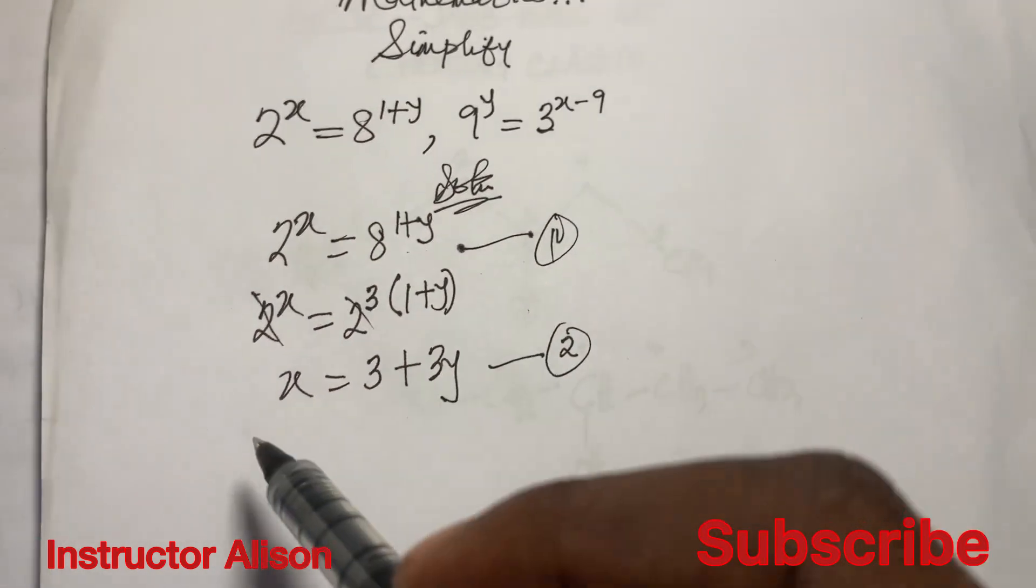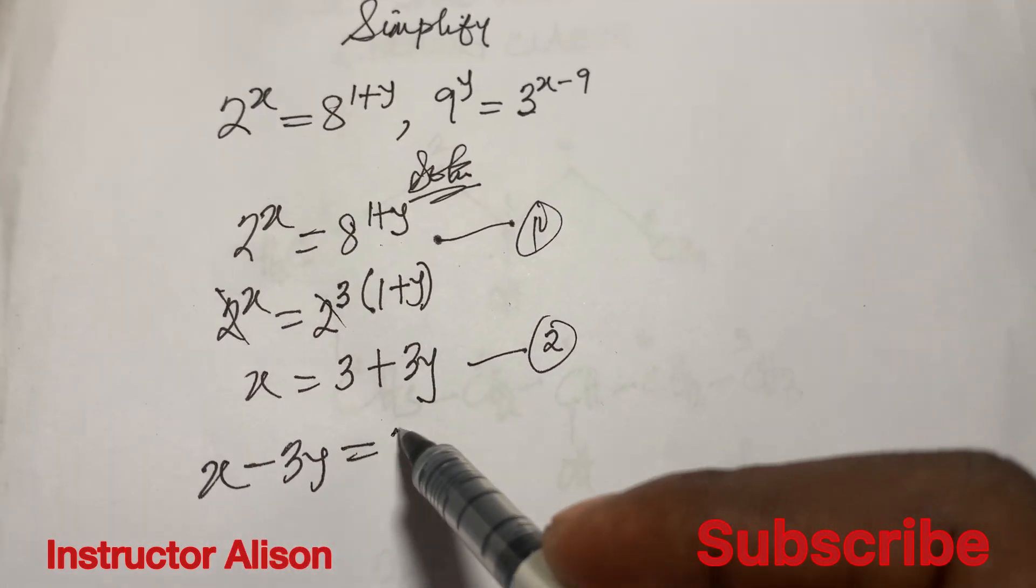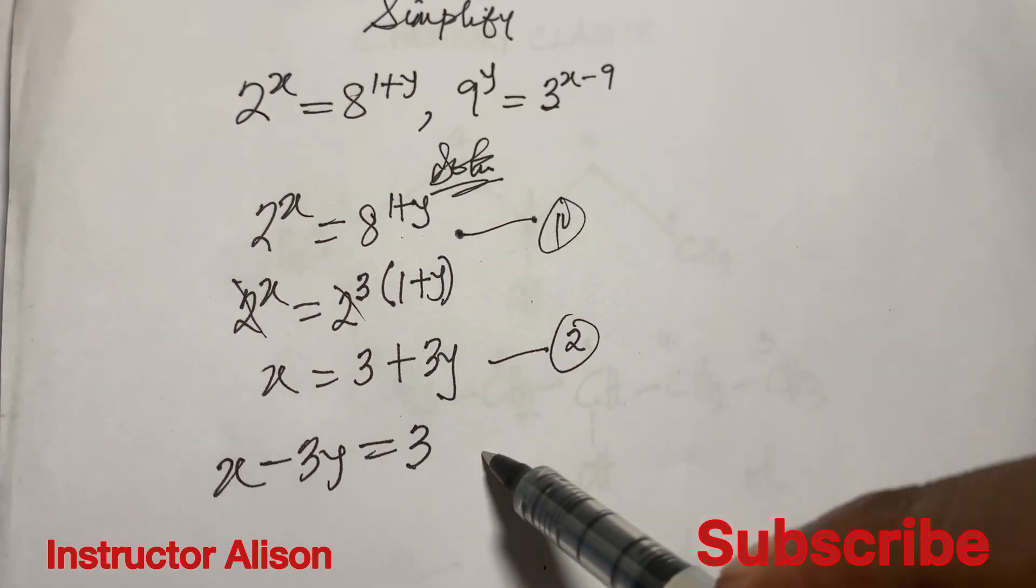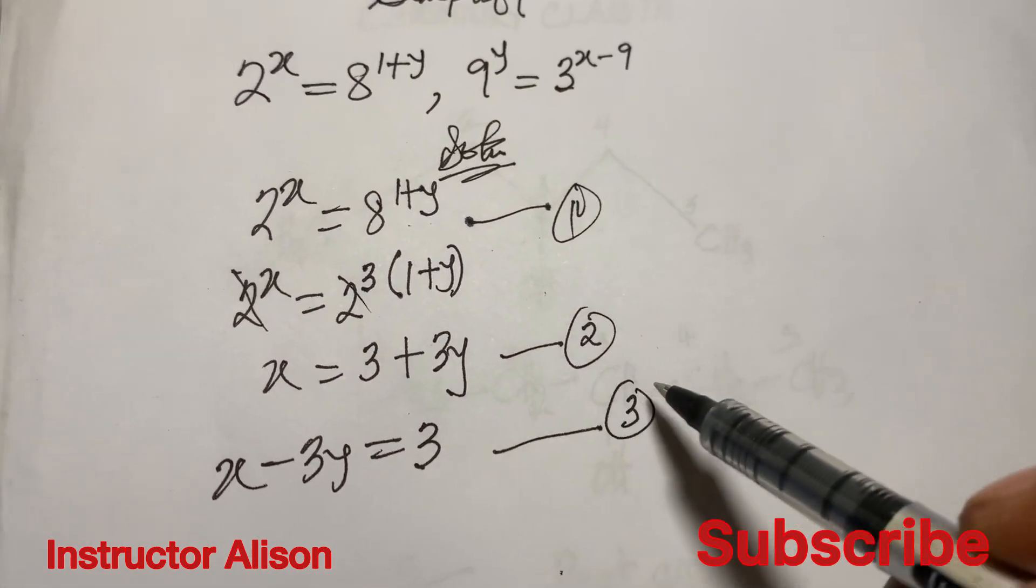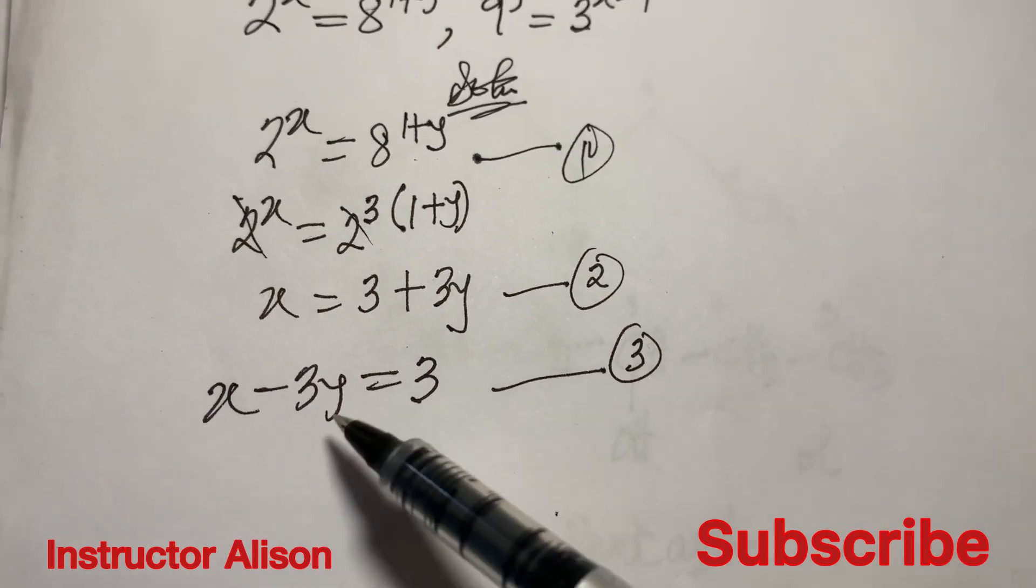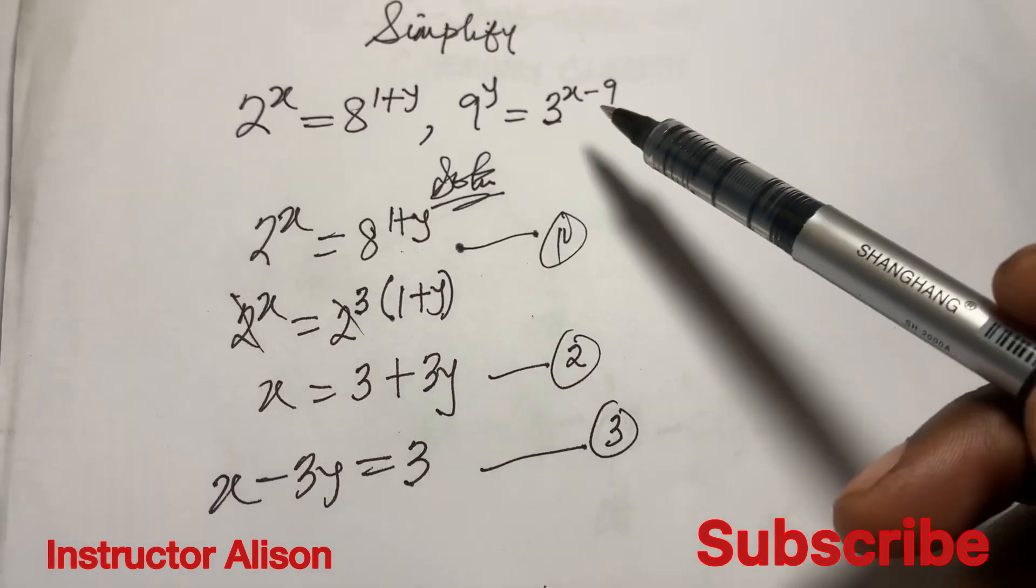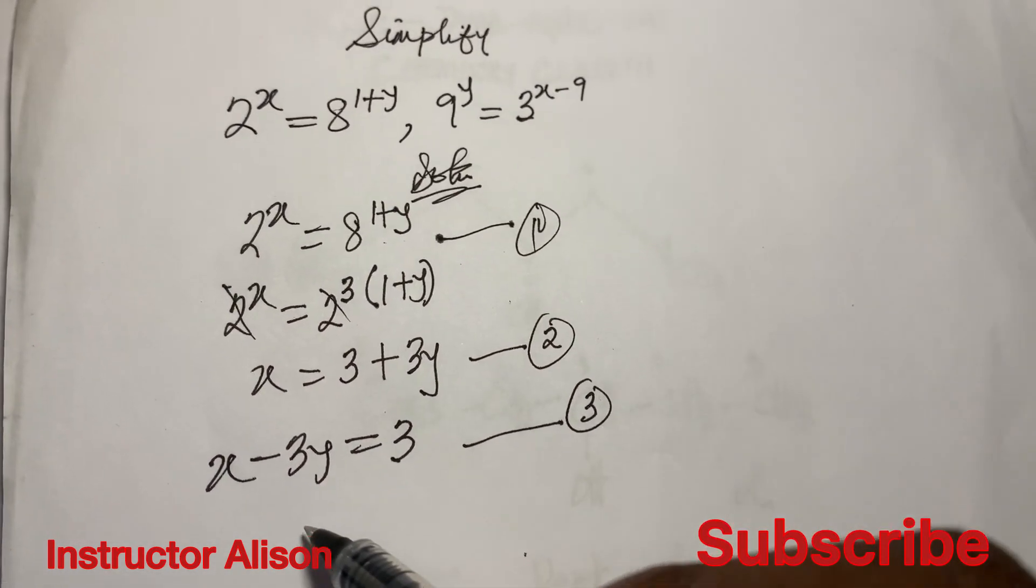At this point this will form a pair of simultaneous equations with the second problem, so it looks very okay with the shape of simultaneous equation having x, y, and then the constant on the right hand side. So we can move this 3y to the left hand side.